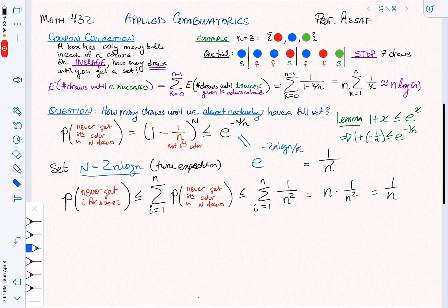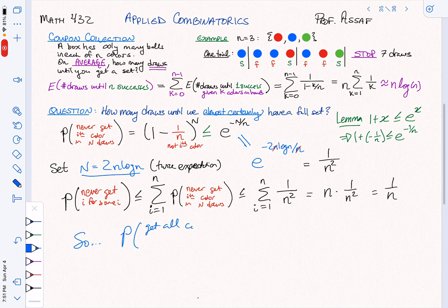So what do we conclude? The probability that I get all colors in 2N log N draws—this is what I've just computed because I've specified the 2N log N draws. This is at least 1 minus the probability of failure, which of course goes to 1 as N goes to infinity.